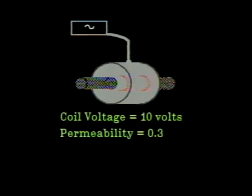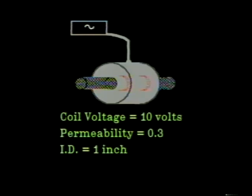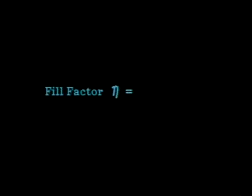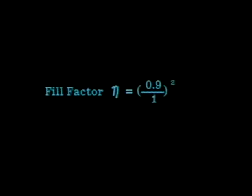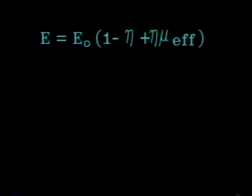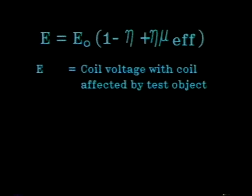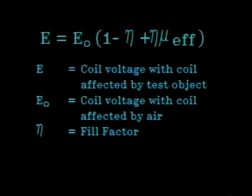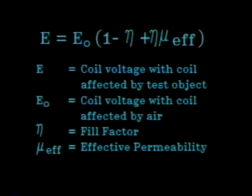For this example, the system parameters are: unloaded coil voltage equals 10 volts; test object effect of permeability equals 0.3; test coil inside diameter equals 1 inch; test object outside diameter equals 0.9 inches. Thus, the fill factor eta equals (0.9 / 1) squared, which equals 0.81. The coil loading equation is given by E equals E-sub-0 times the quantity (1 minus eta plus eta times mu-sub-EFF), where E equals coil voltage with the test object present, E-sub-0 equals coil voltage in air, eta equals fill factor, and mu-sub-EFF equals effective permeability.